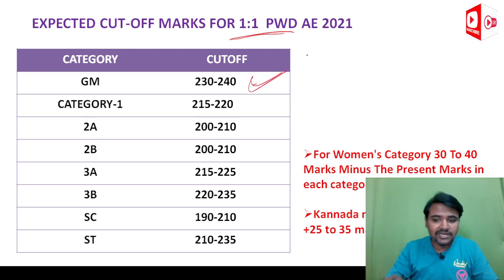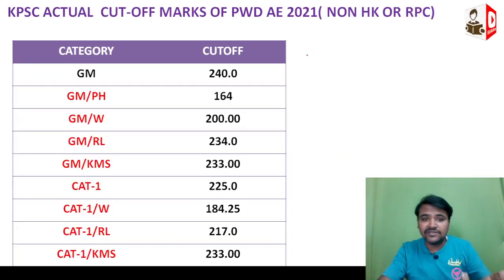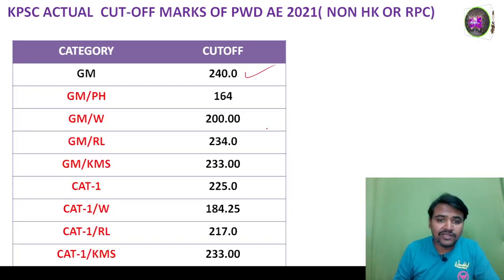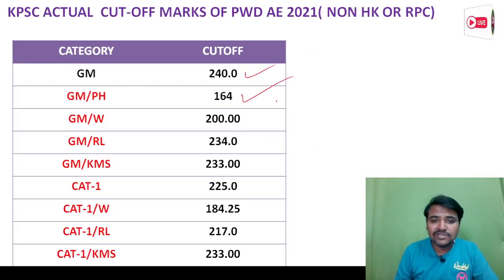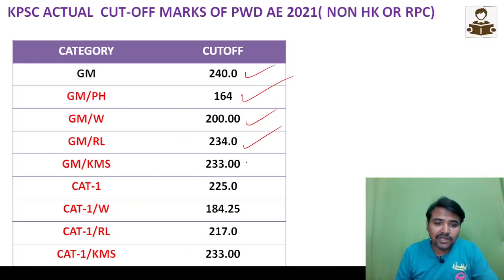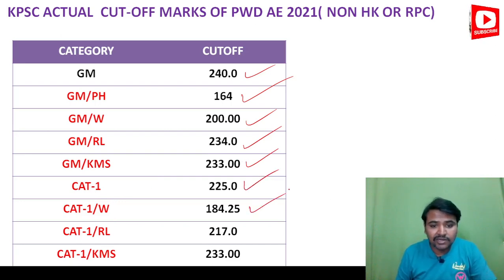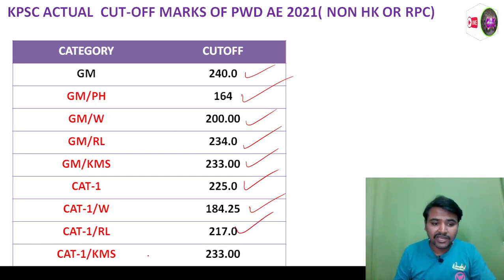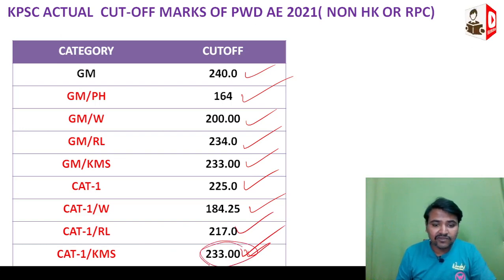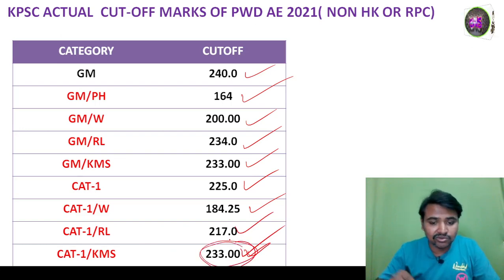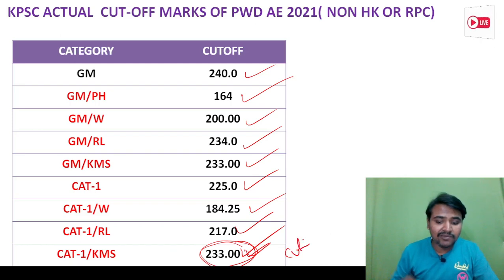The actual cut-off has been done. GM is 240, GM PH 164, GM Women 200, GM Rural 234, GM Kannada Medium 233, Category 1 is 225, Category 1 Women candidates 184, Category 1 Rural 217, Category 1 Kannada Medium 233. So 233 is a very high cut-off in Kannada Medium.